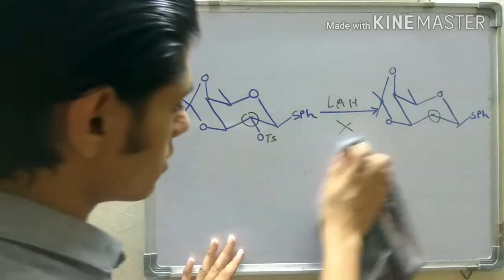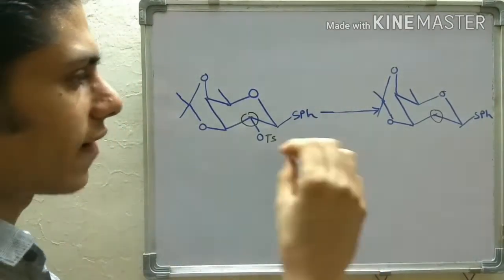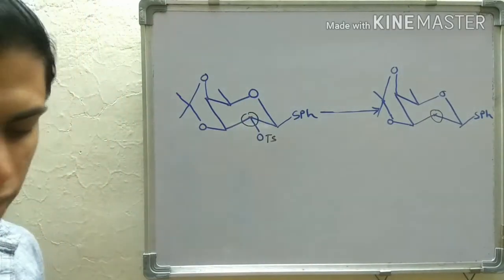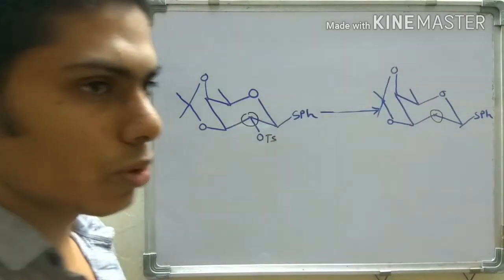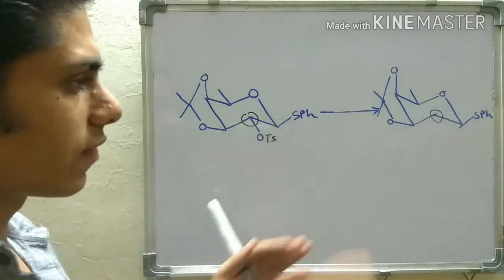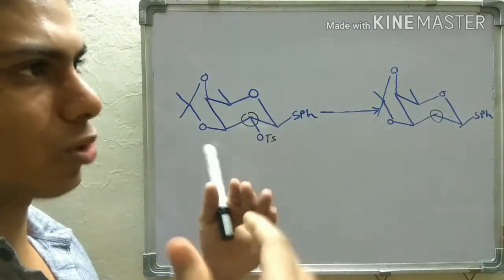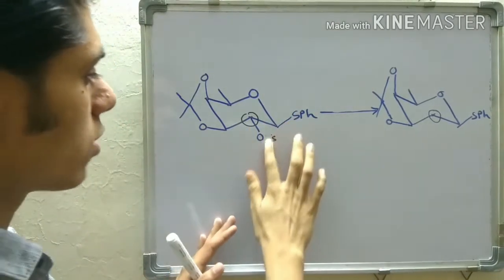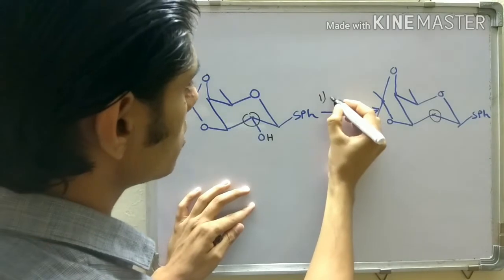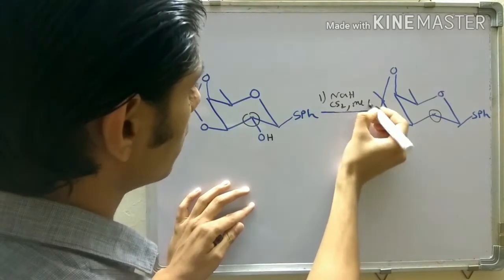The Barton-McCombie reaction is a radical reaction very good for deoxygenation of secondary substrates. We first tried the tosylation-reduction route because it is simple and avoids toxic reagents. The Barton-McCombie conditions use some reagents that are not ideal — specifically carcinogenic substances — so we preferred the simpler technique. When that failed, we were forced to choose the Barton-McCombie reaction. Step one is: sodium hydride, carbon disulfide, and methyl iodide.